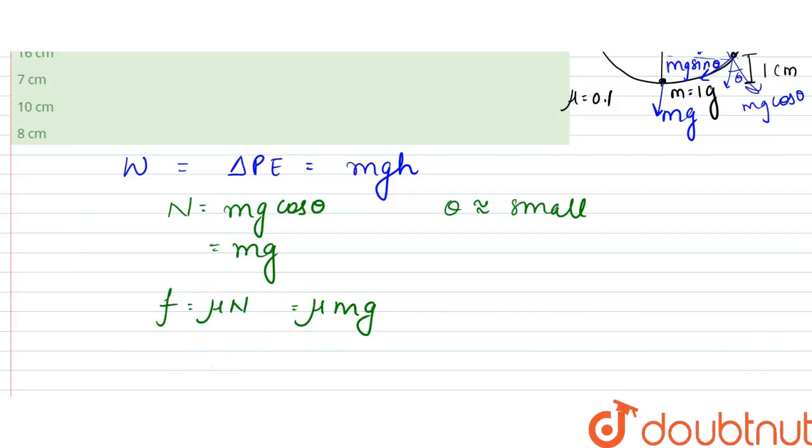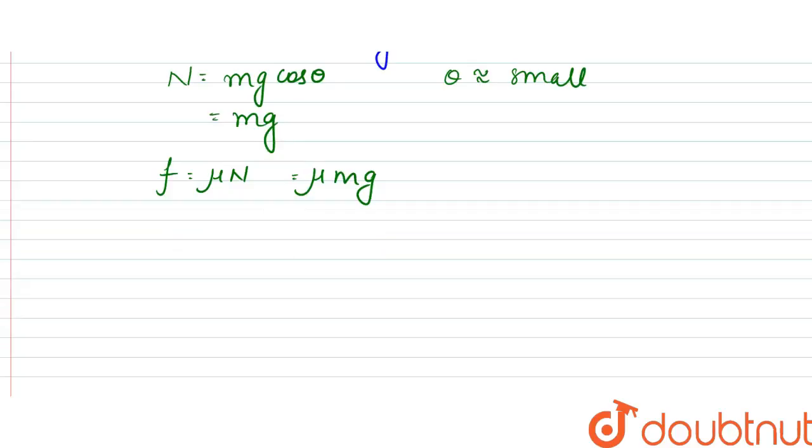So the work done due to frictional force would be equal to the displacement, mu mg times s. Let's say the length of the path is s.